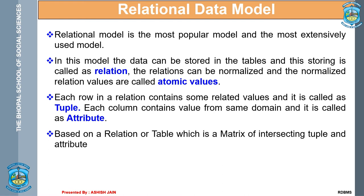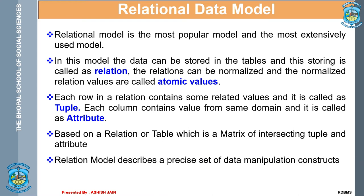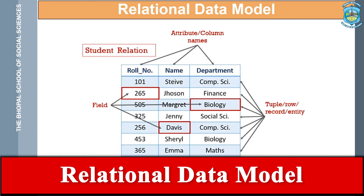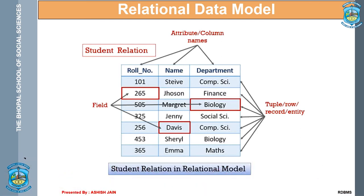The relational model is based on tables — a matrix of intersecting tuples and attributes. A table is a representation using columns and rows. Columns represent different properties or attributes, and a row is the value of those attributes at a particular moment. It describes a precise set of data manipulation constructs so that we can easily find whatever information we are searching for. This is a diagrammatic representation for understanding the relational model constructs — we have a table, and in the relational model a table is called a relation, such as a student relation or student table.